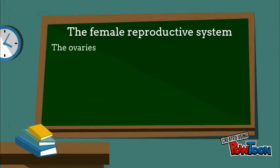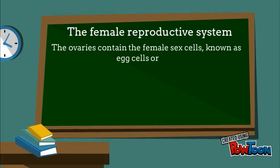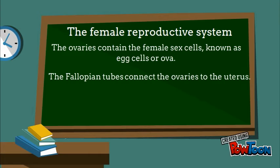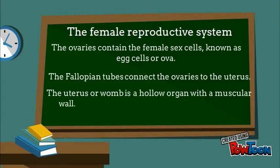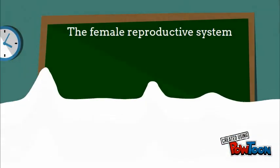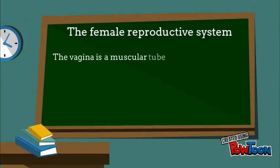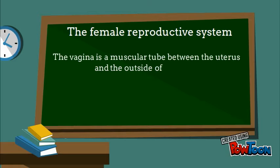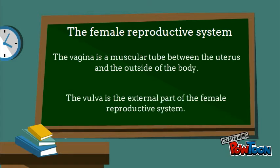The female reproductive system. The ovaries contain the female sex cells, known as sex cells or ova. The fallopian tubes connect the ovaries to the uterus. The uterus or womb is a hollow organ with a muscular wall — the baby develops here during pregnancy. The vagina is a muscular tube between the uterus and the outside of the body. And the vulva is the external part of the female reproductive system.